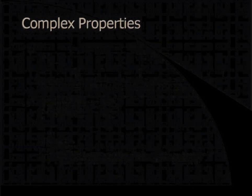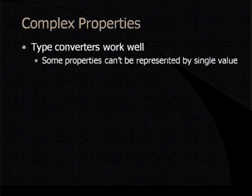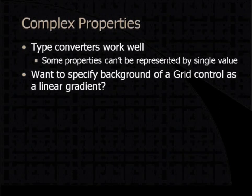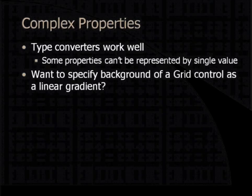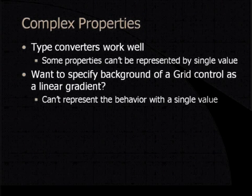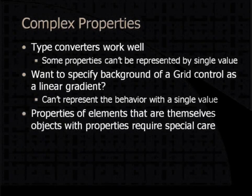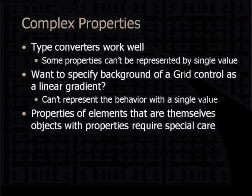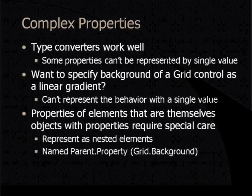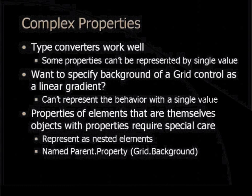Type converters work fine, and there are a bunch of built-in ones, and we could also create our own. But some properties can't be represented by a single value. What if you want to specify the background of a grid control as a linear gradient — a gradient which moves from one color to another across the width of the grid? You need to specify both colors, at which point we switch from one color to the other — there are a number of things we can't represent with a single value. Properties of elements that are themselves objects with properties, like the linear gradient, require some special care. We'll represent them as nested elements and name them parent.property, like grid.background. Rather than being attributes, these properties will be represented as elements instead.